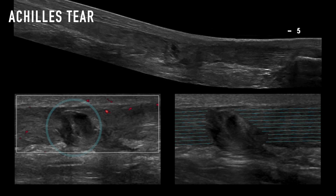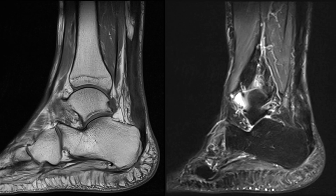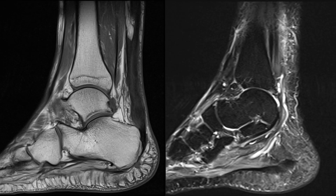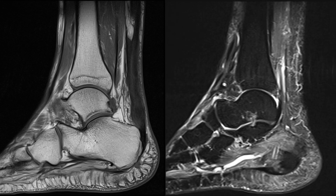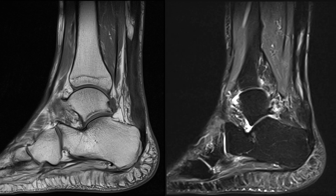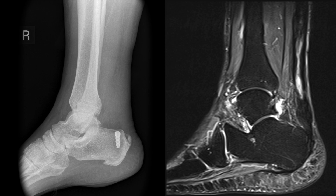This is another example of an Achilles tear on ultrasound. And finally, the same pathology as seen on MRI. Note the high signal within the Achilles tendon indicating a rupture. This patient had surgical repair of the Achilles tendon tear, as seen by the surgical screw on X-ray.